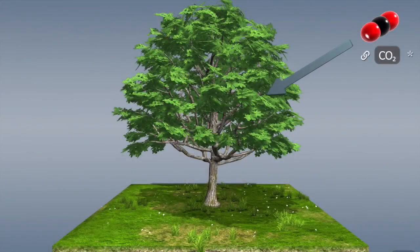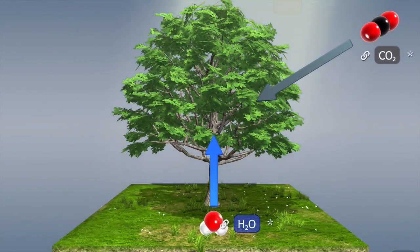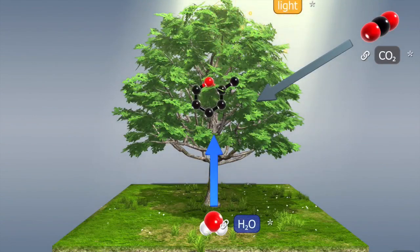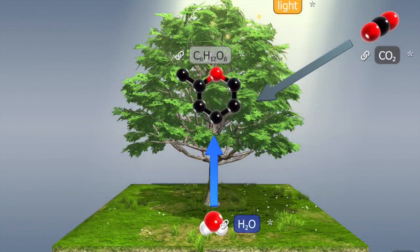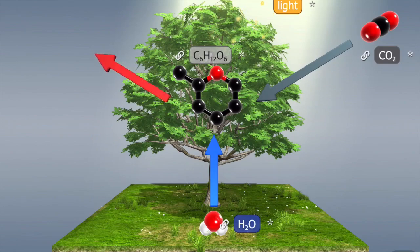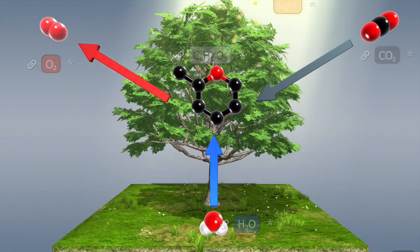During photosynthesis, plants produce organic material — glucose — from inorganic material — carbon dioxide — using the energy of light. Oxygen is also formed in this process.